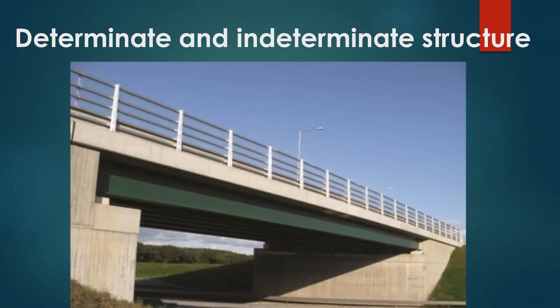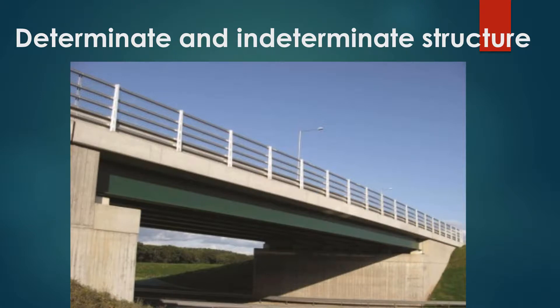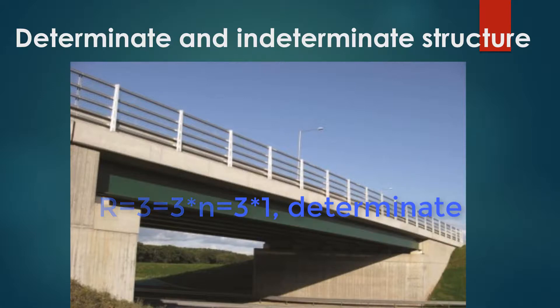This figure shows a bridge consisting of one span, which will have three unknown forces at both supports. So r equals 3 and n equals 1, where n is the number of structure parts. Therefore r equals 3 times 1 and the structure is determinate.